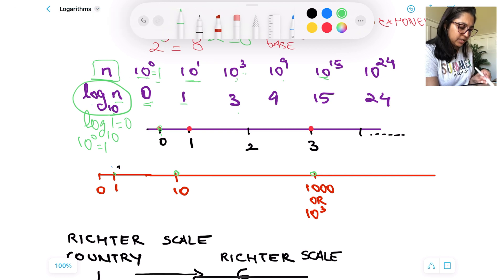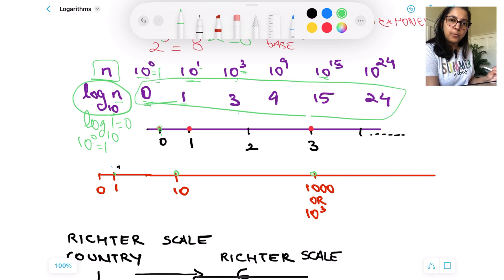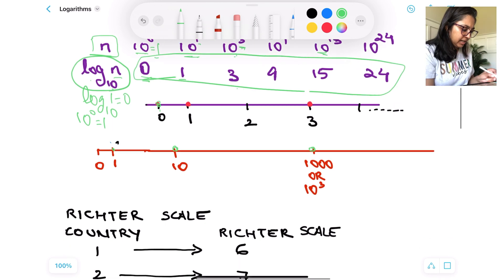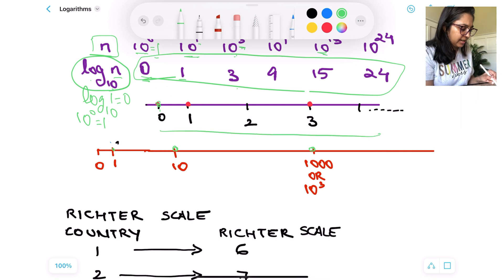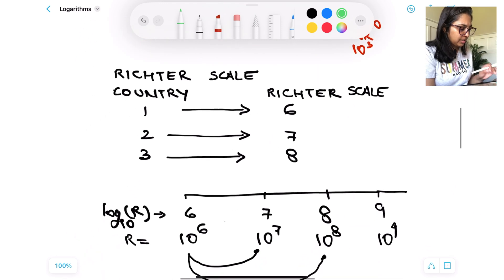Now you get the idea. We're getting exponents 0, 1, 3, 15, and 24. Now these numbers become so easy to work with and to plot on a number line as simple as right here. Like 0 can be plotted right here, 1 here, then we have a 3 here, and so on and so forth. That's one of the uses of logarithms, how they can be simplified.